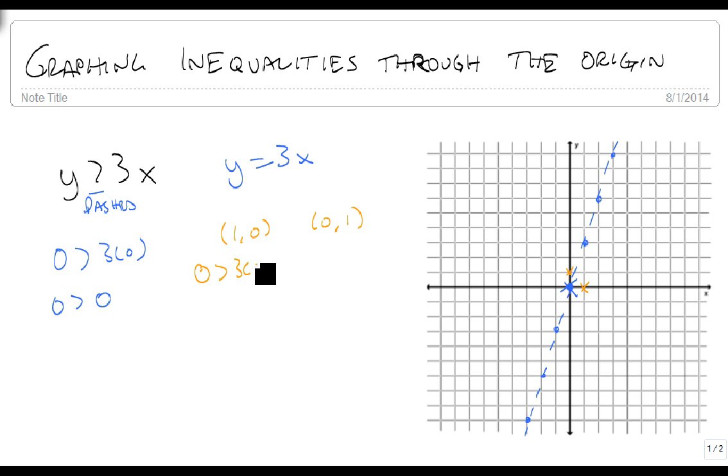0 is bigger than 3 times 1, 0 is bigger than 3, which is false. So that says, don't shade over here.